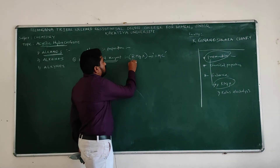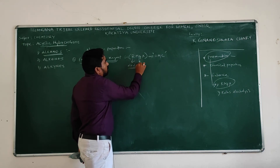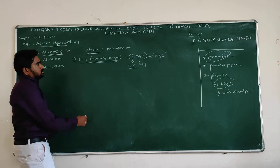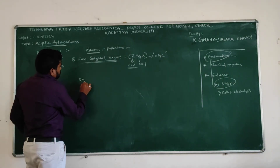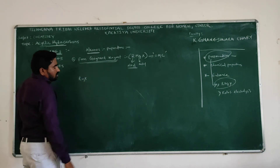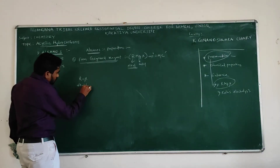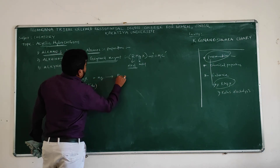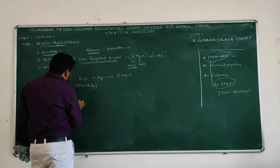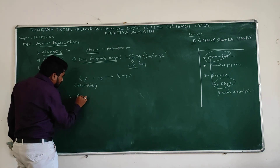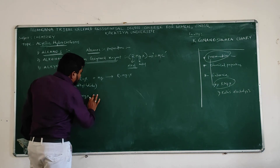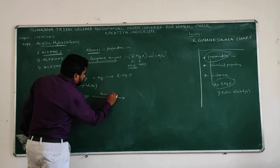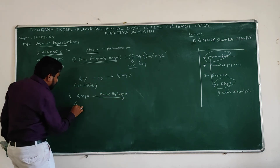So what are the preparation methods? How do we prepare RMGX? We know that RX means alkyl halide. When alkyl halide is treated with magnesium, we prepare RMGX. And from this RMGX, when the Grignard reagent reacts with acidic hydrogen, what happens? We will get alkanes.